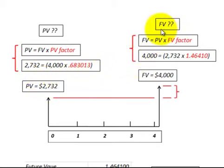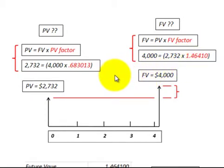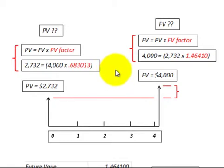Now let's look at the situation where we have to determine the future value. The future value equals the present value times the future value factor. So you take the known present value, multiply it by the discount rate factor, and determine the future value. That's a simple cash flow for determining present values and future values with single sum amounts.